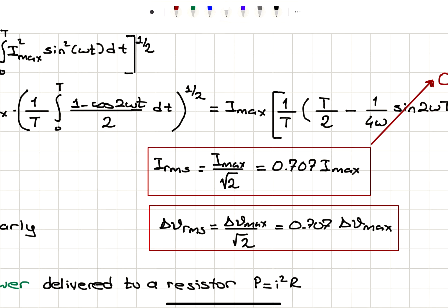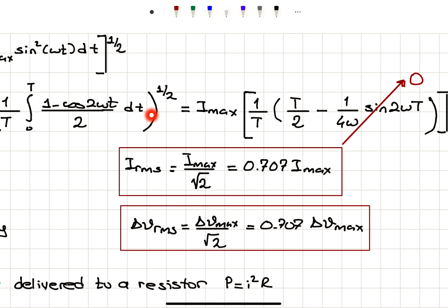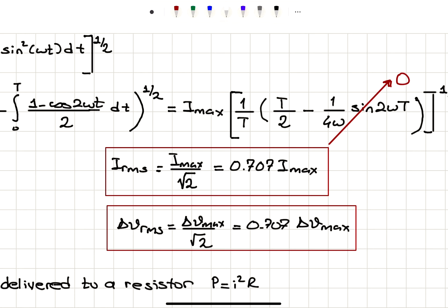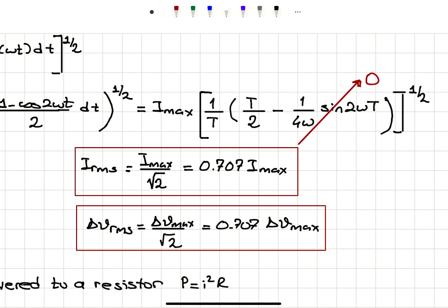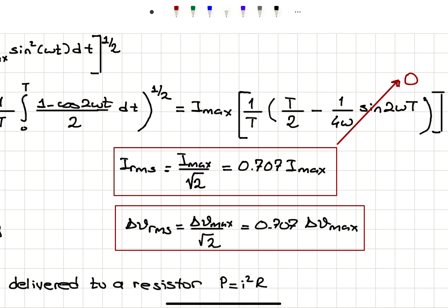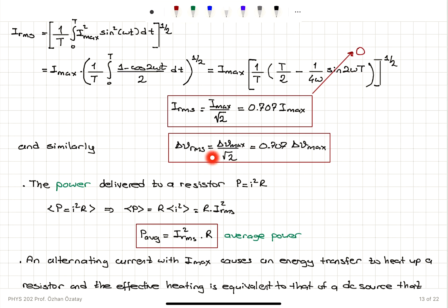Completing the integral: the period T over 2 divided by T gives 1/2, and the cosine term evaluates to zero at both limits (since sin(2ωT) = sin(4π) = 0 and sin(0) = 0). Therefore, I_rms = I_max / √2 ≈ 0.707 × I_max. Similarly, the RMS voltage is ΔV_rms = ΔV_max / √2 ≈ 0.707 × ΔV_max.